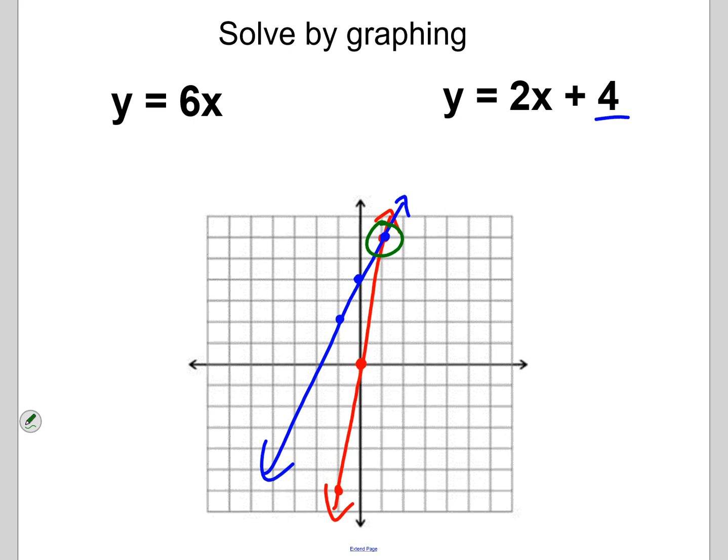That would be a value of 1 for the x and 6 for the y. So what that point is telling me is that's where the lines intersect. If I actually put 1, 6 into both of the equations, it would work in both. So 1, 6 are the values of x and y that make both of those equations true.